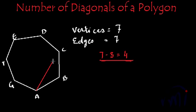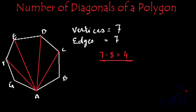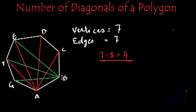So let me draw diagonals from point A to point C, diagonal from point A to point D, then point A to point E, and point A to point F. So these will be the 4 diagonals drawn from point A. And then if I draw diagonals from point B, again I will be able to draw 4 diagonals: from point B to point G, then point B to point F, point B to point E, and point B to point D. From point B also I have drawn 4 unique diagonals.